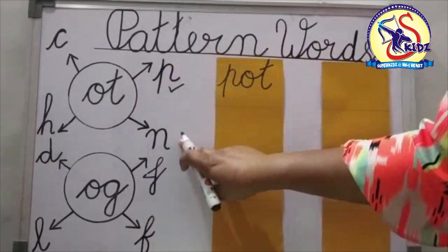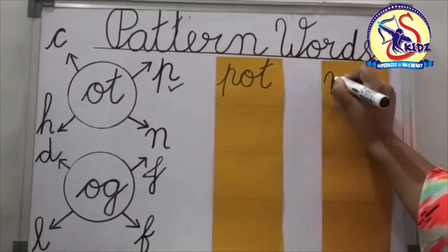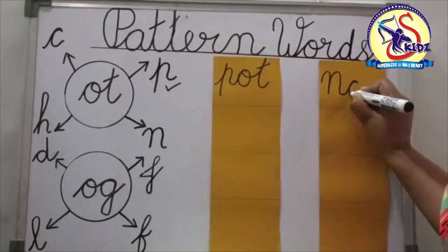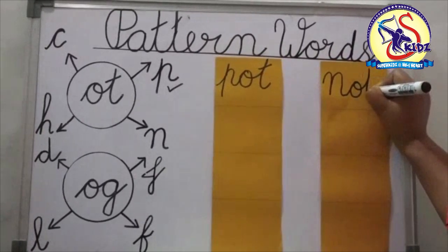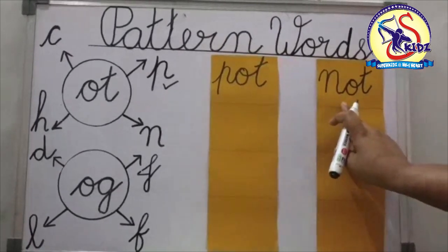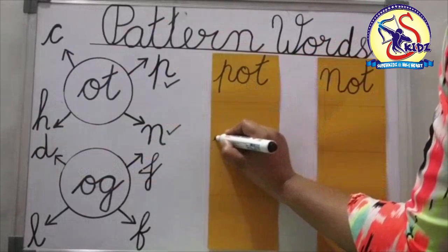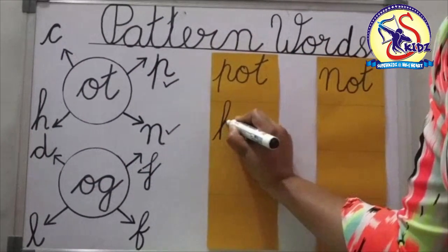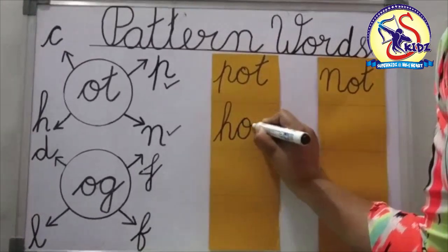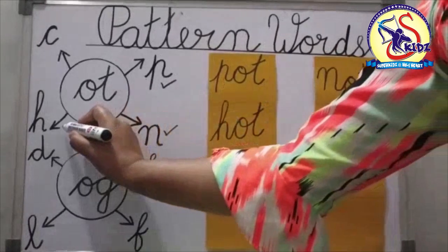Now see the next word. N is given. First of all we will write the letter N, then we will join the pattern O-T. Now we will get the word N-O-T, not. Now see the next letter: H. We will join pattern O-T and get the word H-O-T, hot.